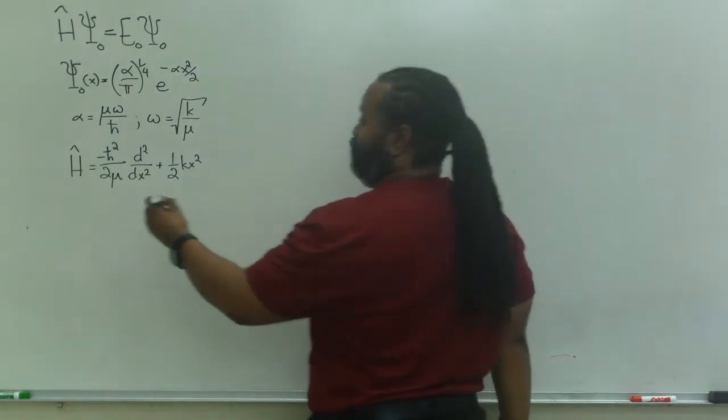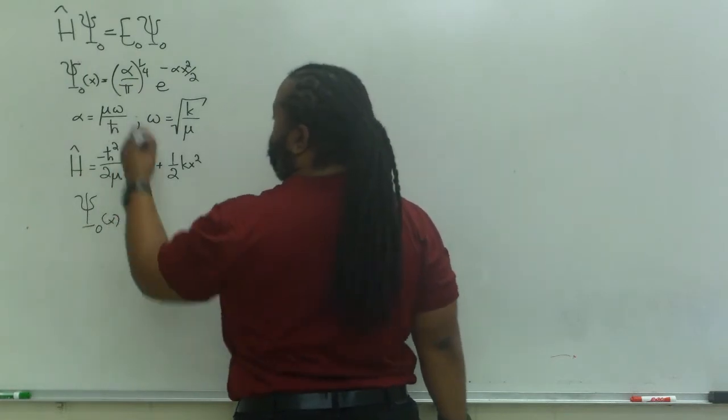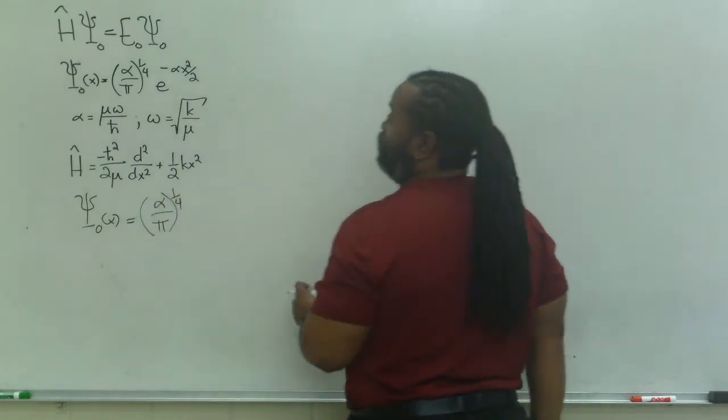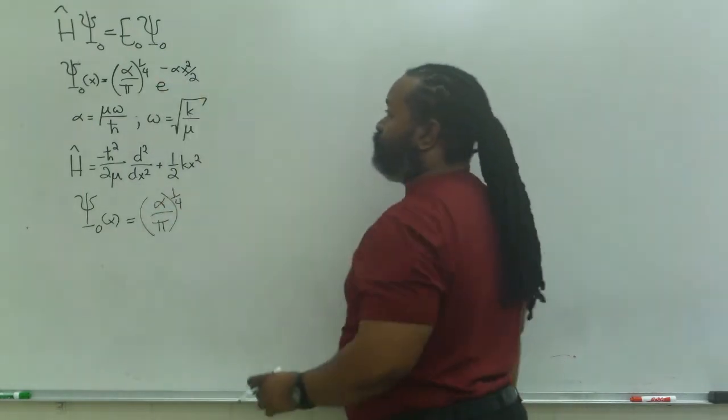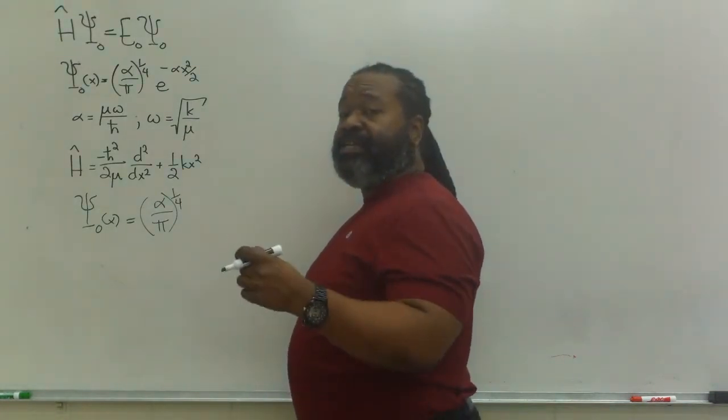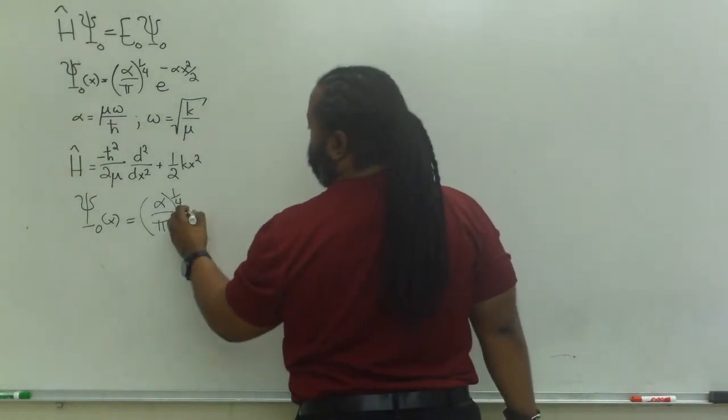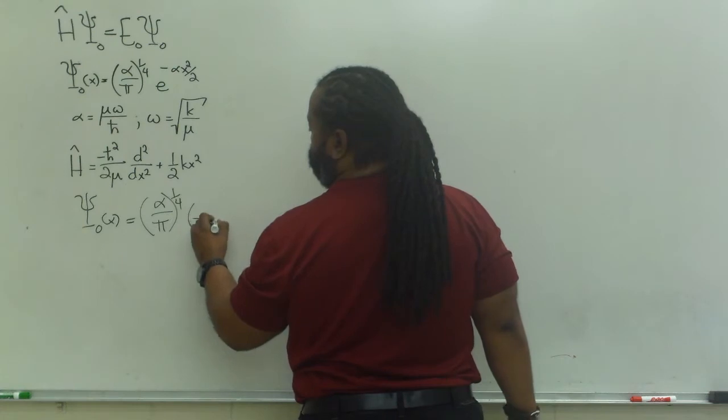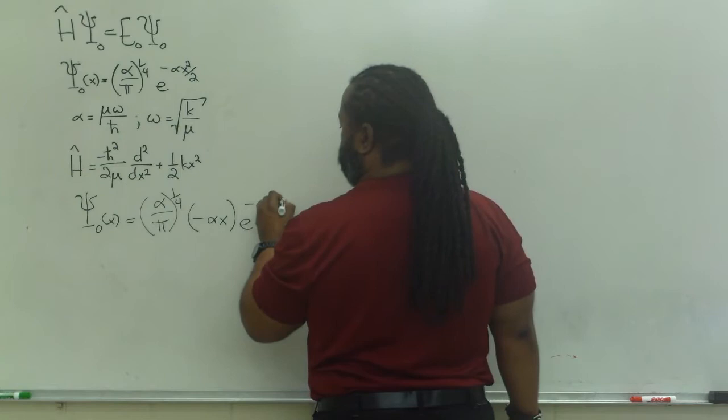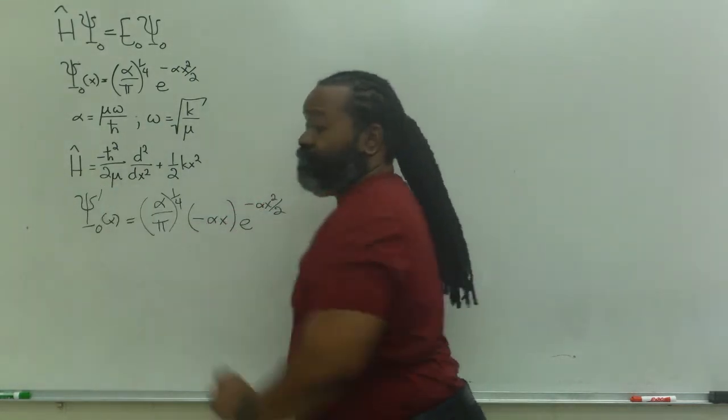So, the first derivative of wave function v equals 0, the constants will remain. That's our normalization factor. And for the exponential, I need to multiply the exponential itself, which survives, by the derivative of its argument. So, this minus alpha x squared over 2 will just become minus alpha x, and we get the exponential back. So that's the first derivative.